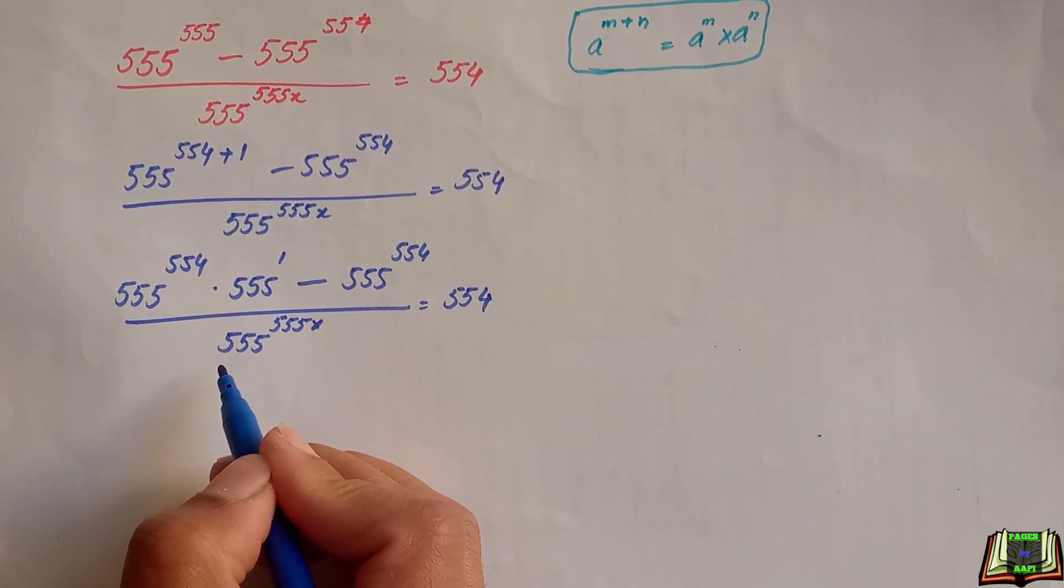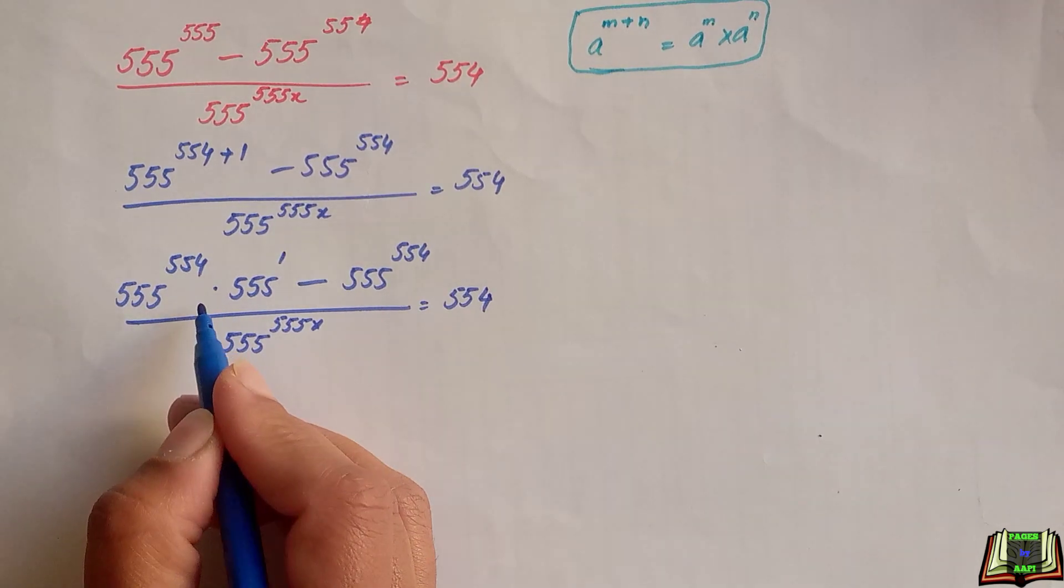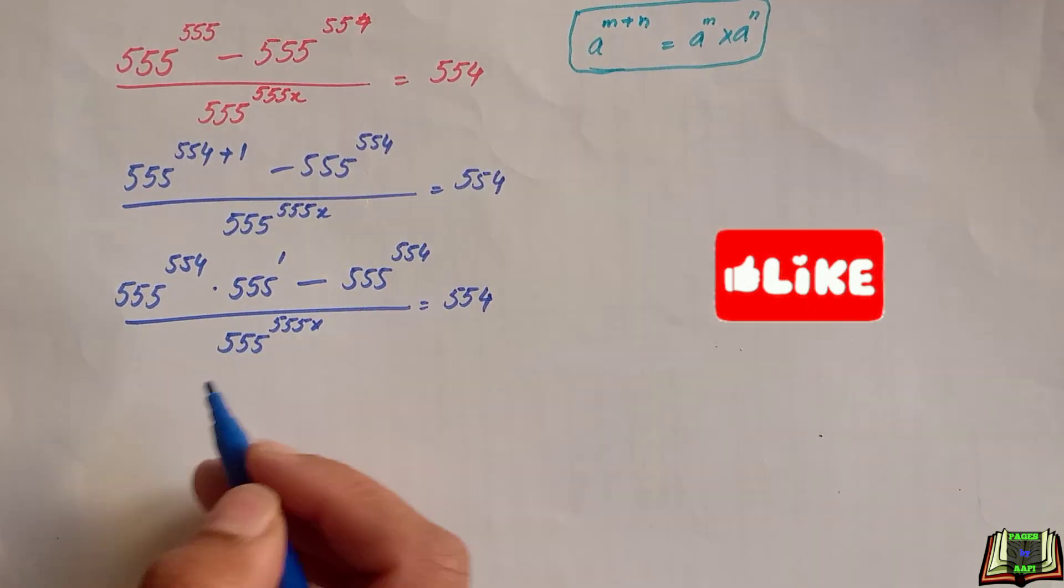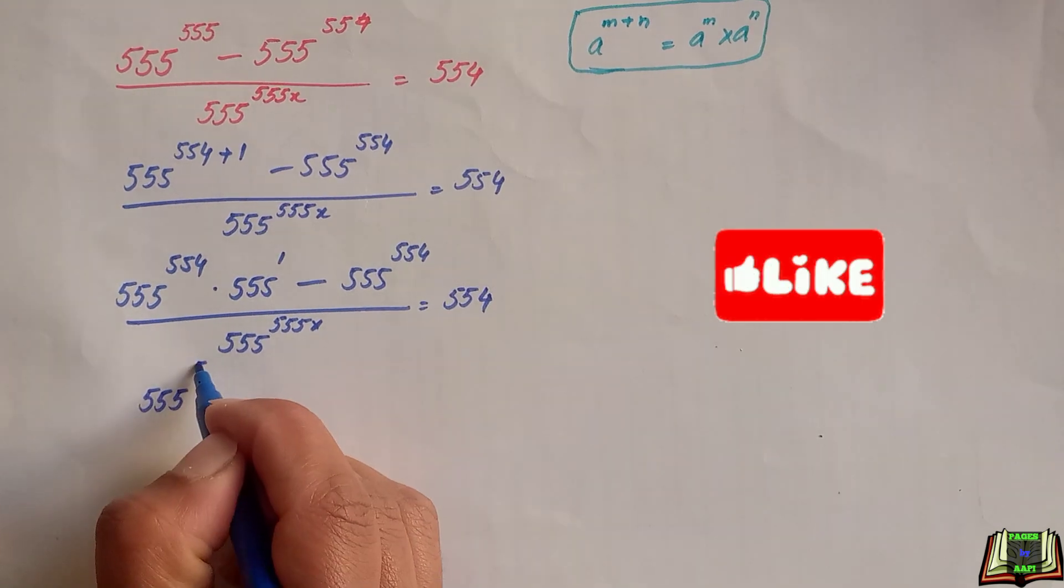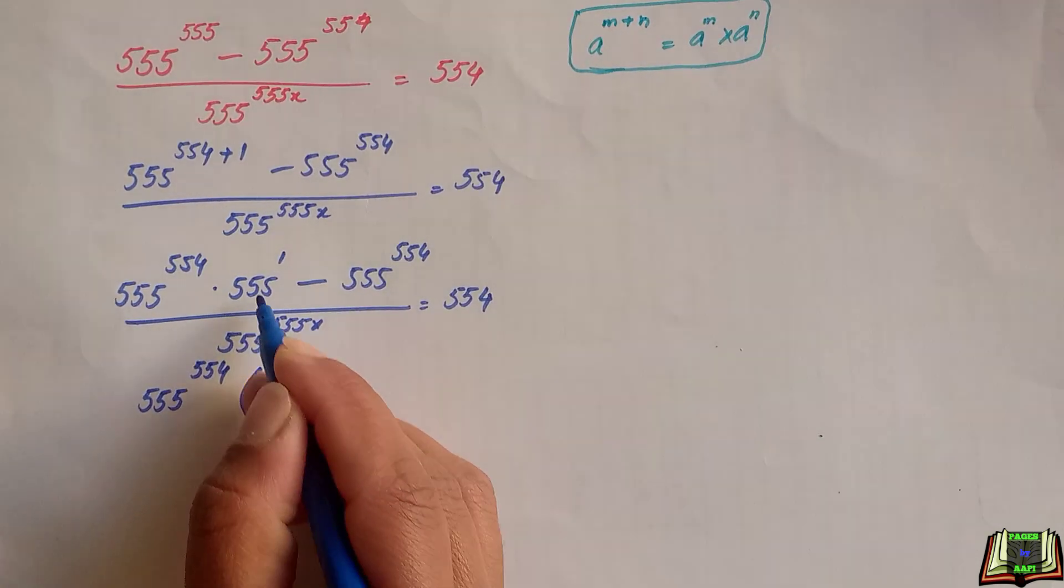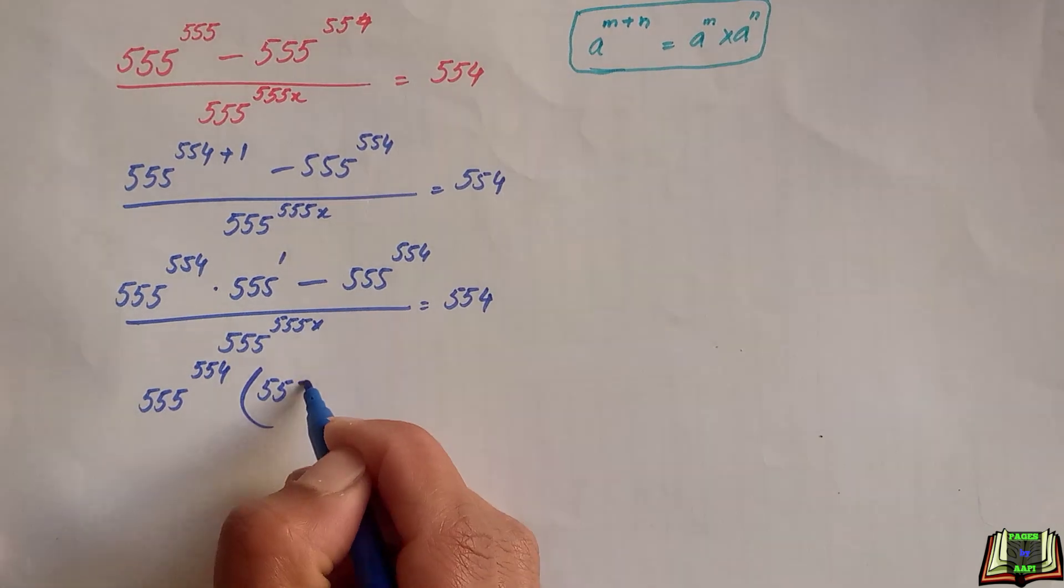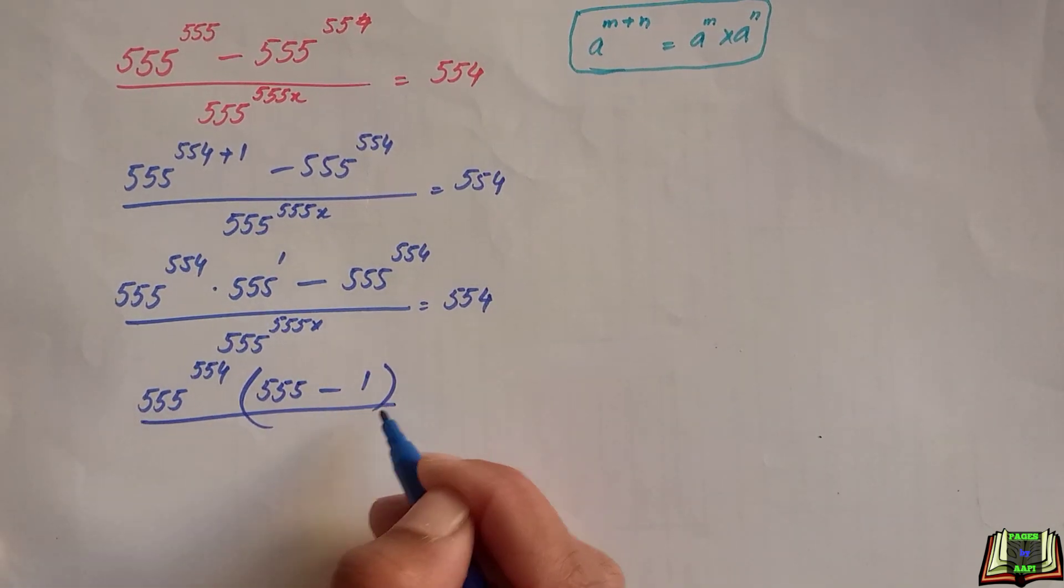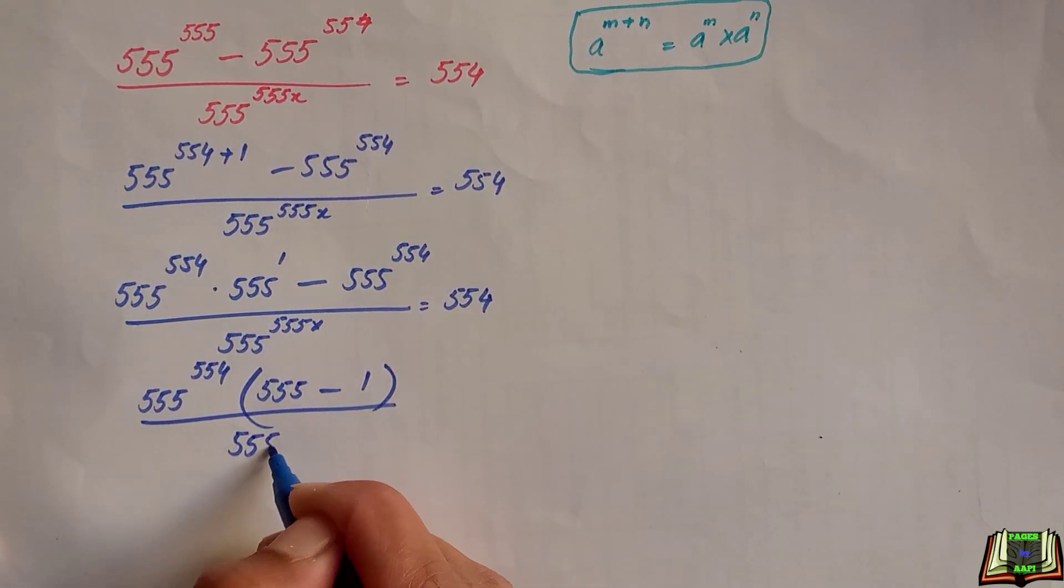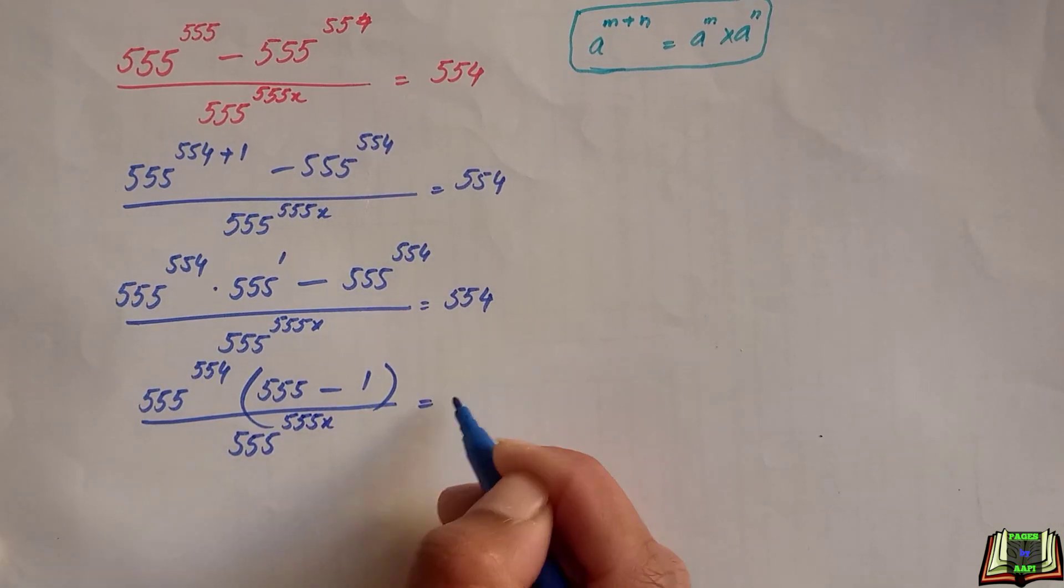We can see that we can factor out 555 raised to power 554. So taking this as common we have 555 raised to power 554 times 555 minus 1.